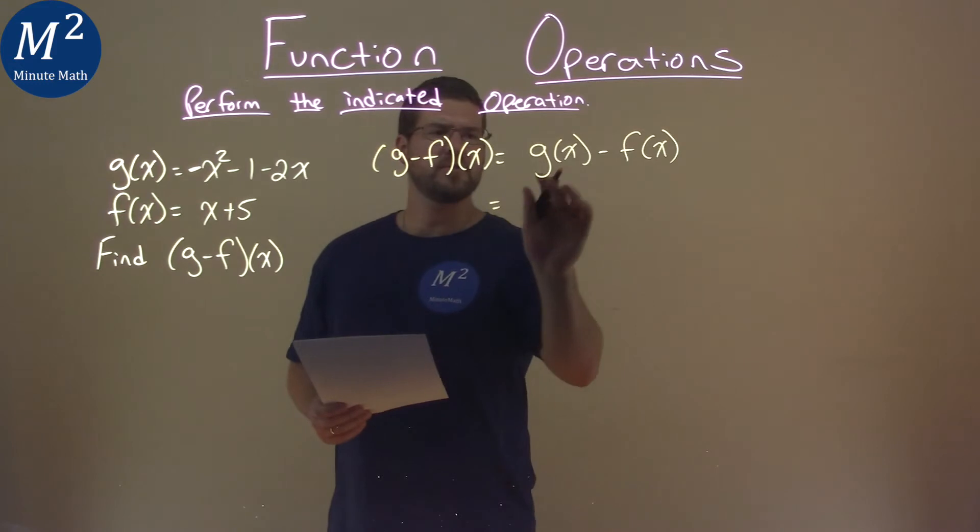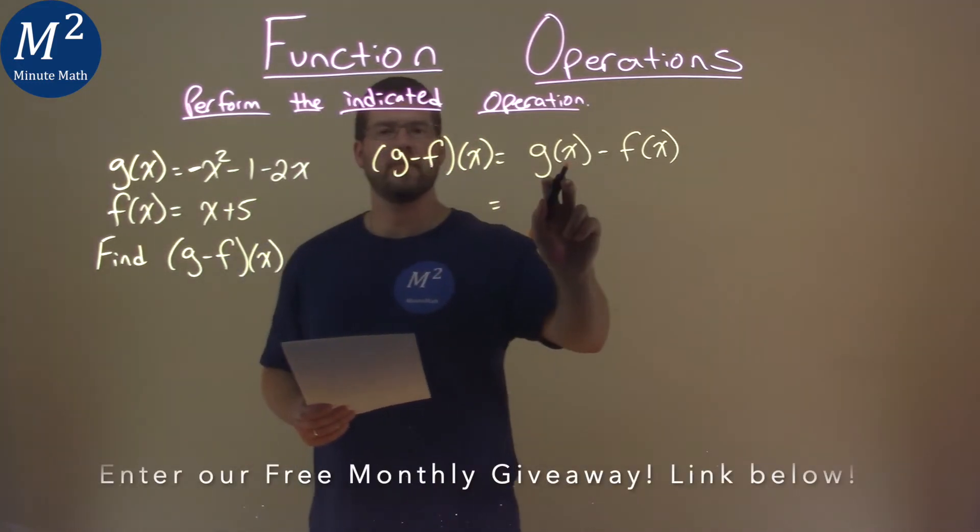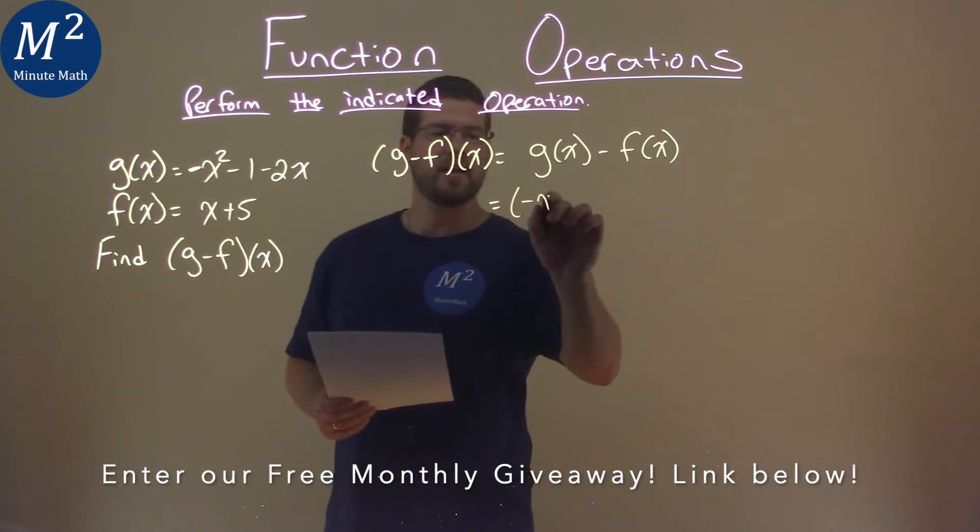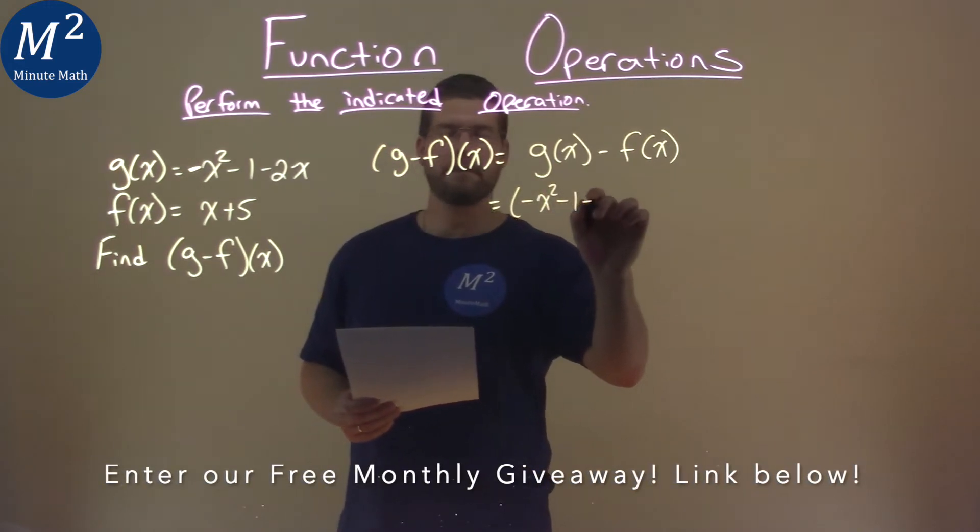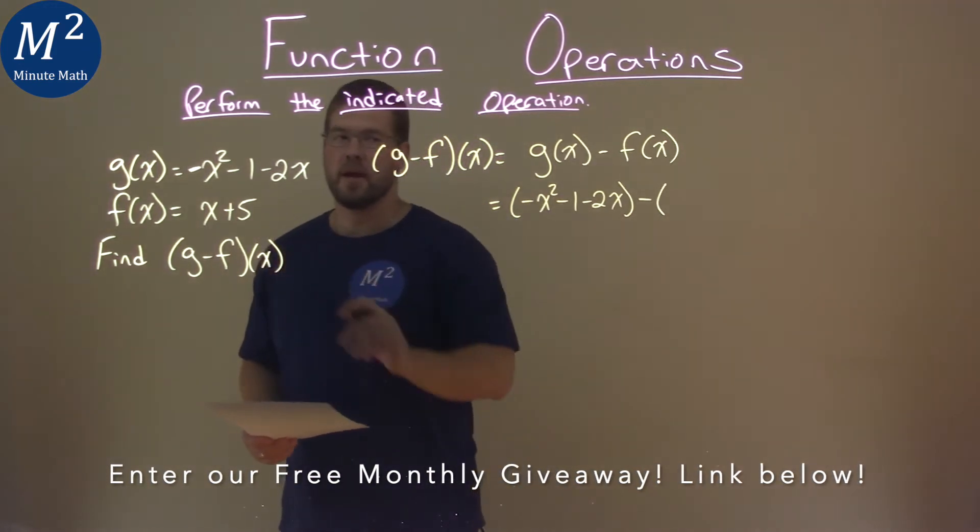So let's substitute g of x, which is negative x squared minus 1 minus 2x. And we're going to do the same thing with f of x being x plus 5.